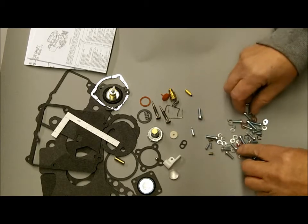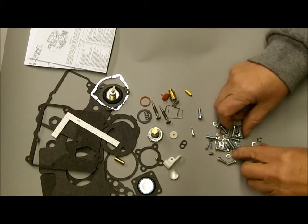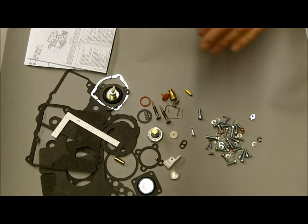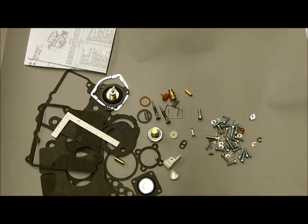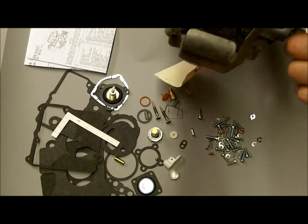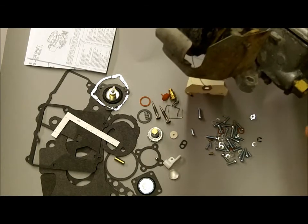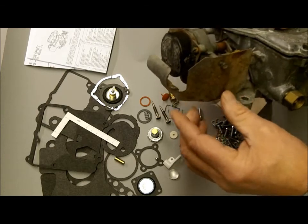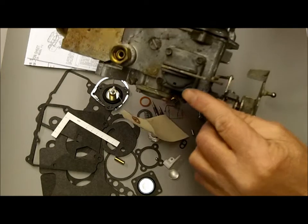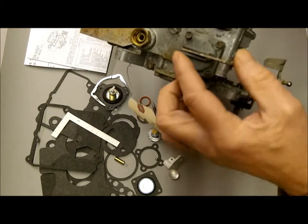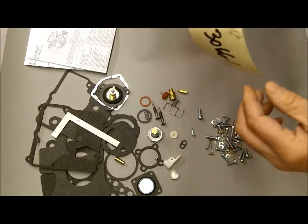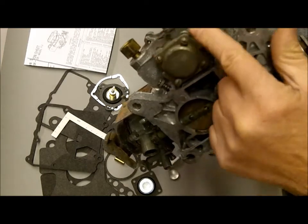And so we got new float bowl screws. We have new screws for things like, for one thing, for putting on your choke cover, new screws for your choke guard here, new screws for your accelerator pump diaphragm. Now these are screws and not the original bolts, and you get new screws for your power valve here.